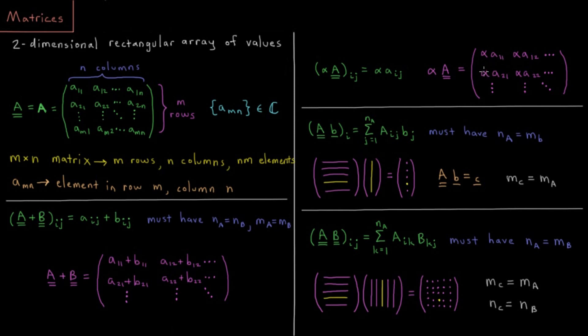Element 21 is alpha A21, element 12 is alpha A12, and so on until we've filled out the entire array.